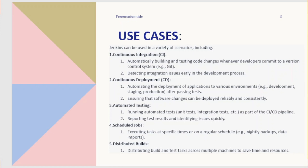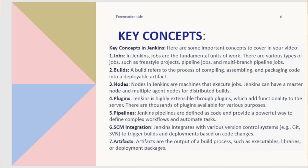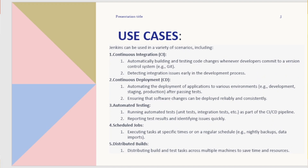Automated testing: running automated tests — unit tests, integration tests, etc. — as part of the CI/CD pipeline, and reporting test results to identify issues quickly. Scheduled jobs: executing tasks at specific times or on a regular schedule, e.g. nightly backups and data imports. Distributed builds: distributing build and test tasks across multiple machines to save time and resources.